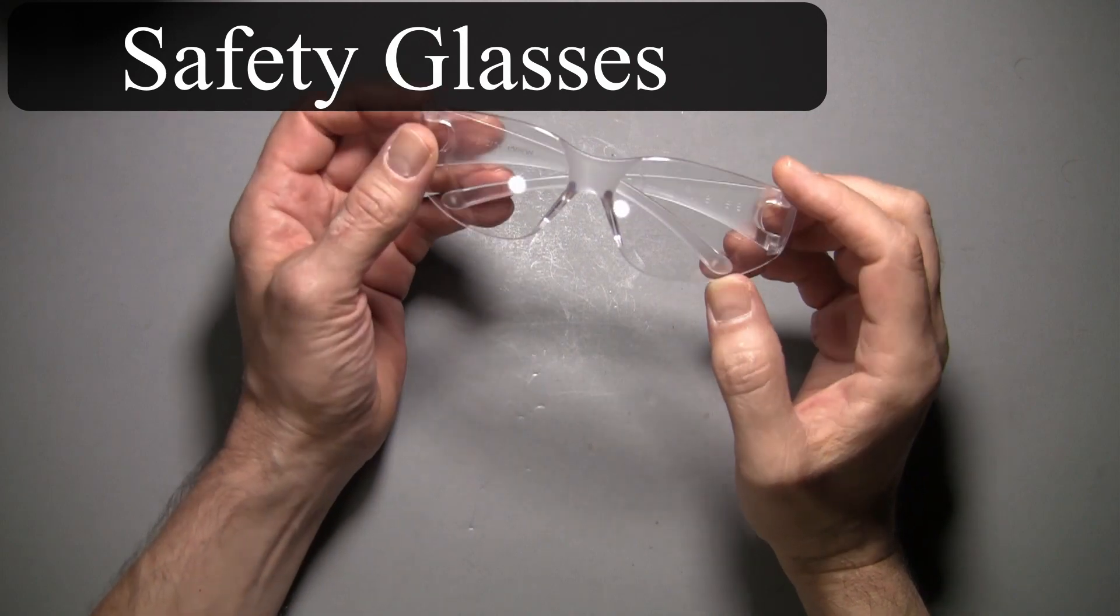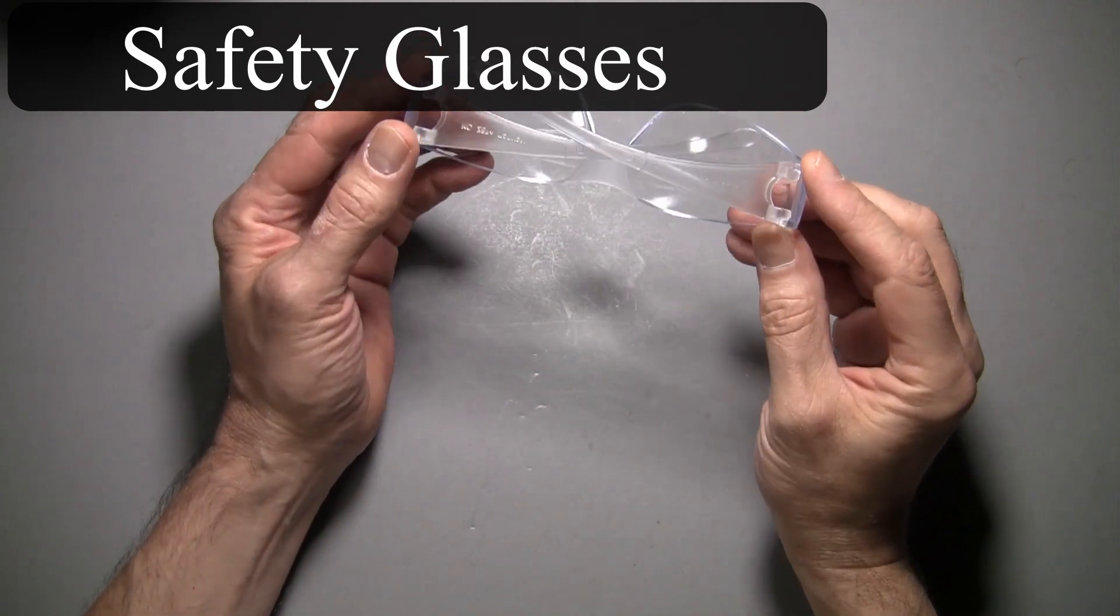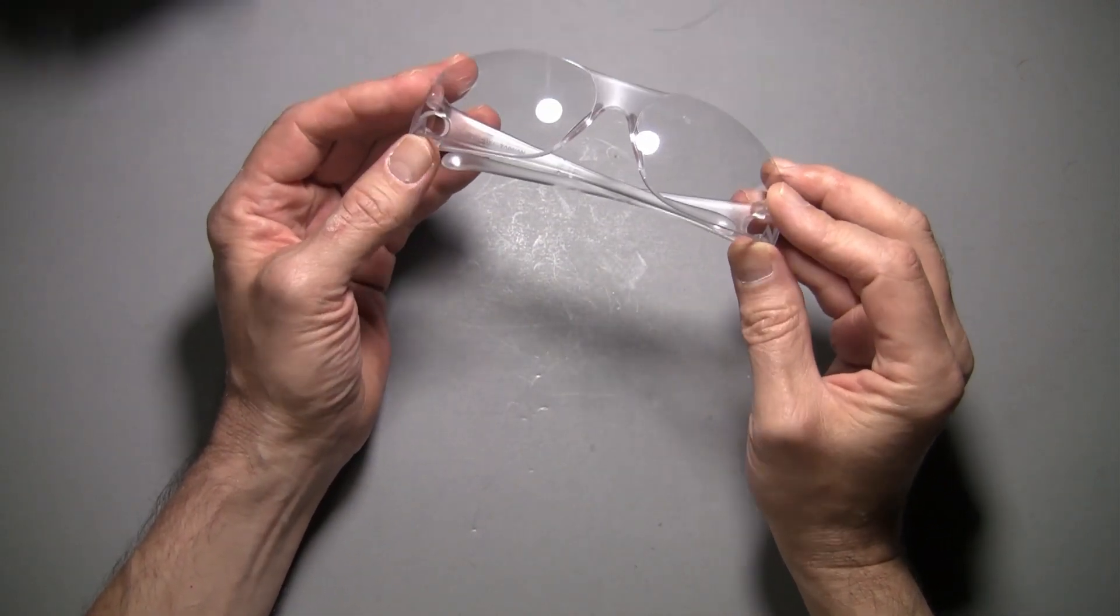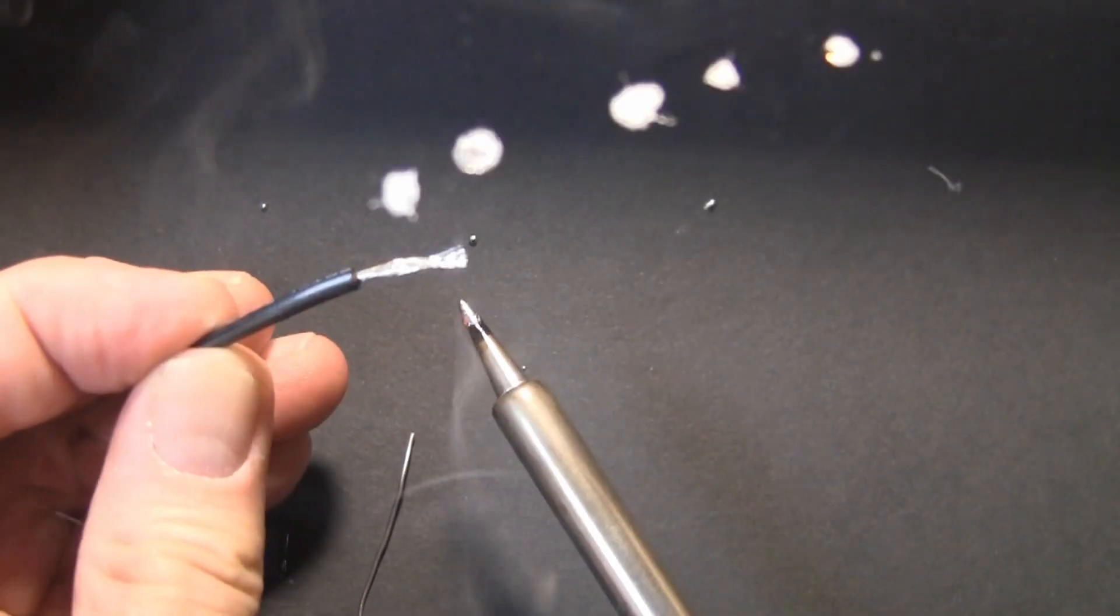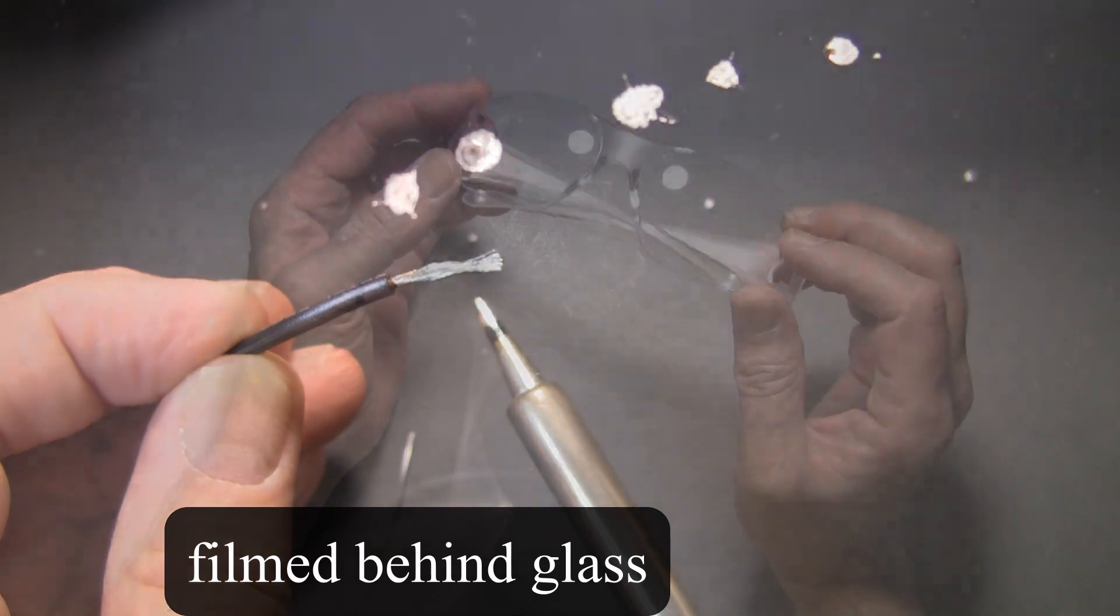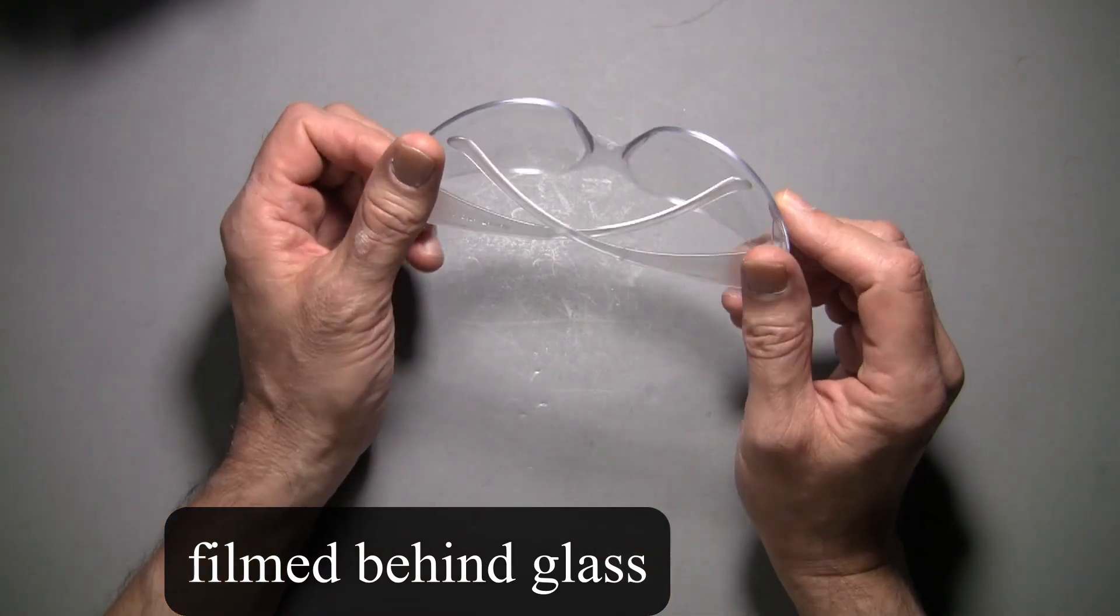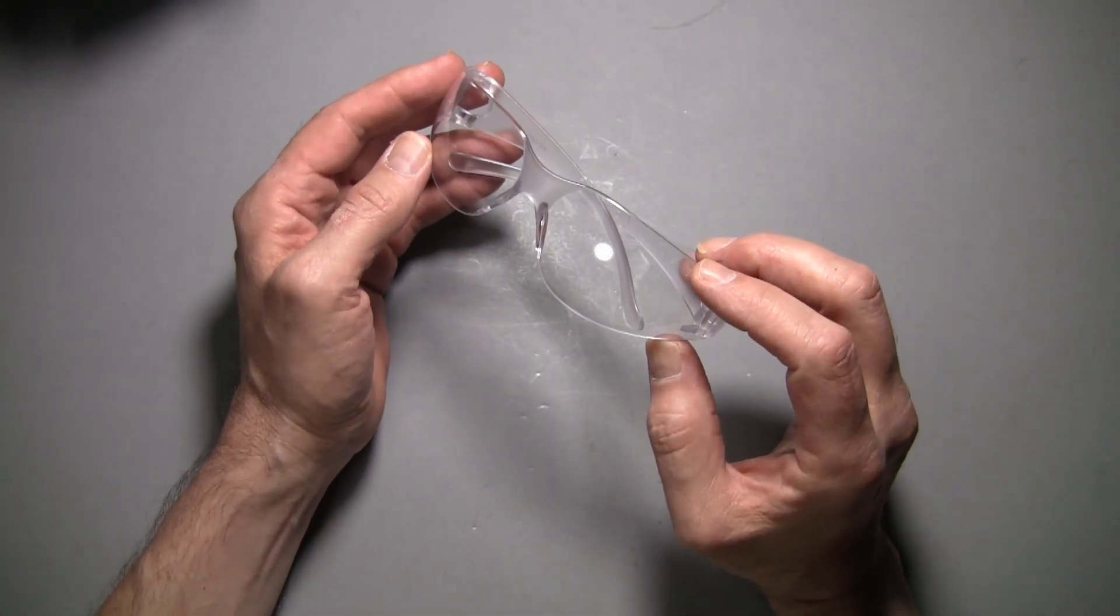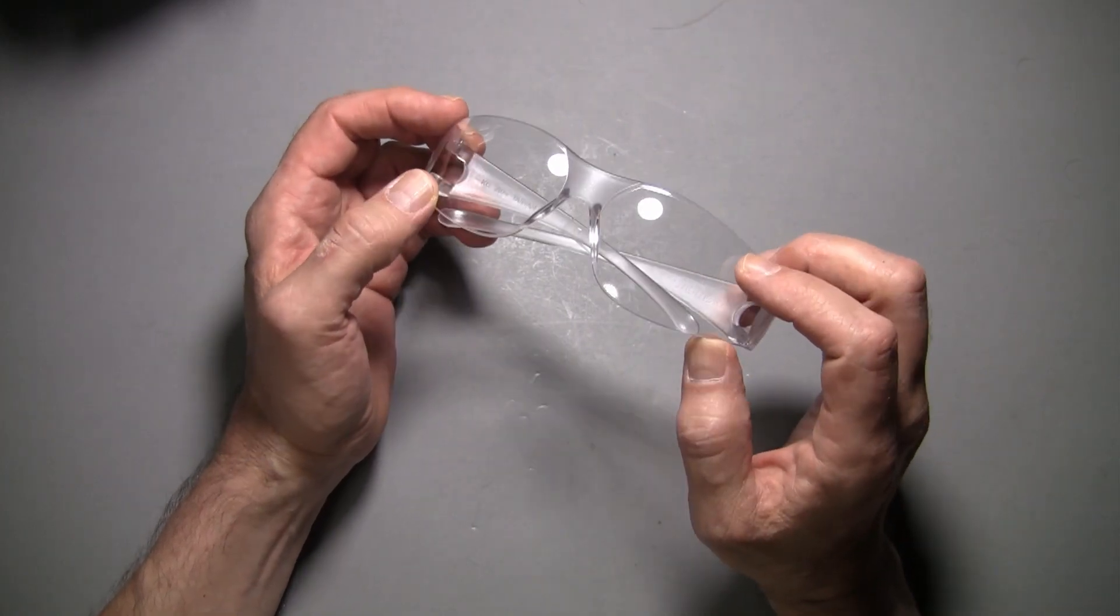Safety glasses. Now, before you call me a snowflake, I've seen two guys go to the hospital because of this. Molten solder splattered into their eyes. So I suggest anybody starting out, especially when you're doing wiring, to wear glasses when soldering.